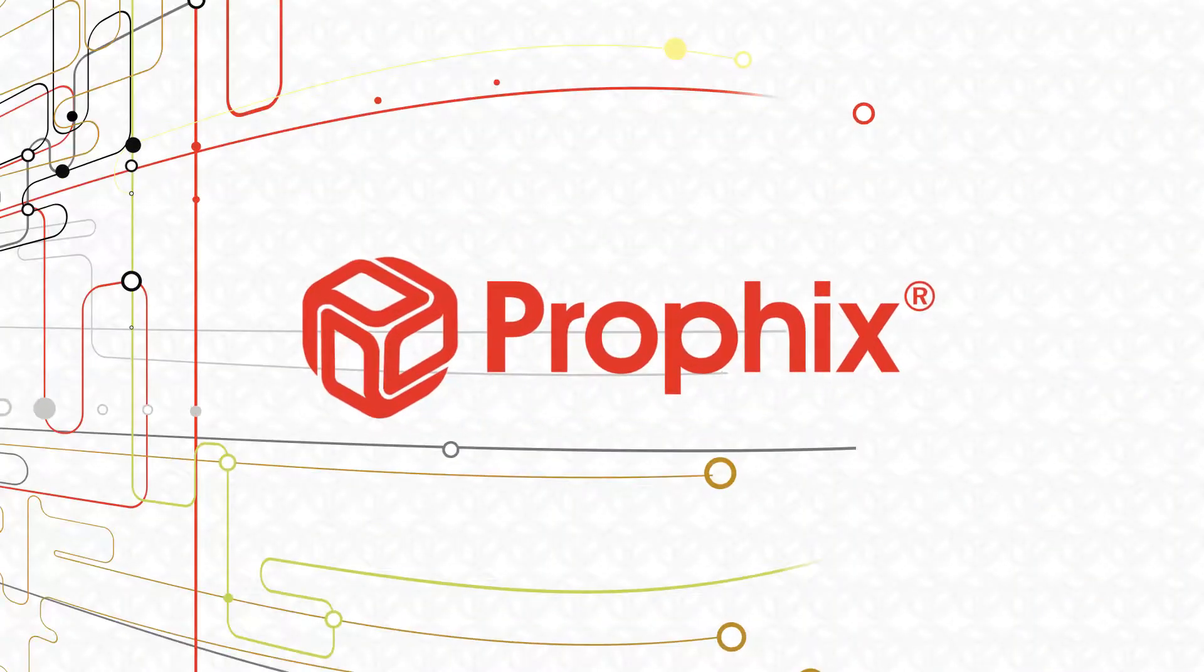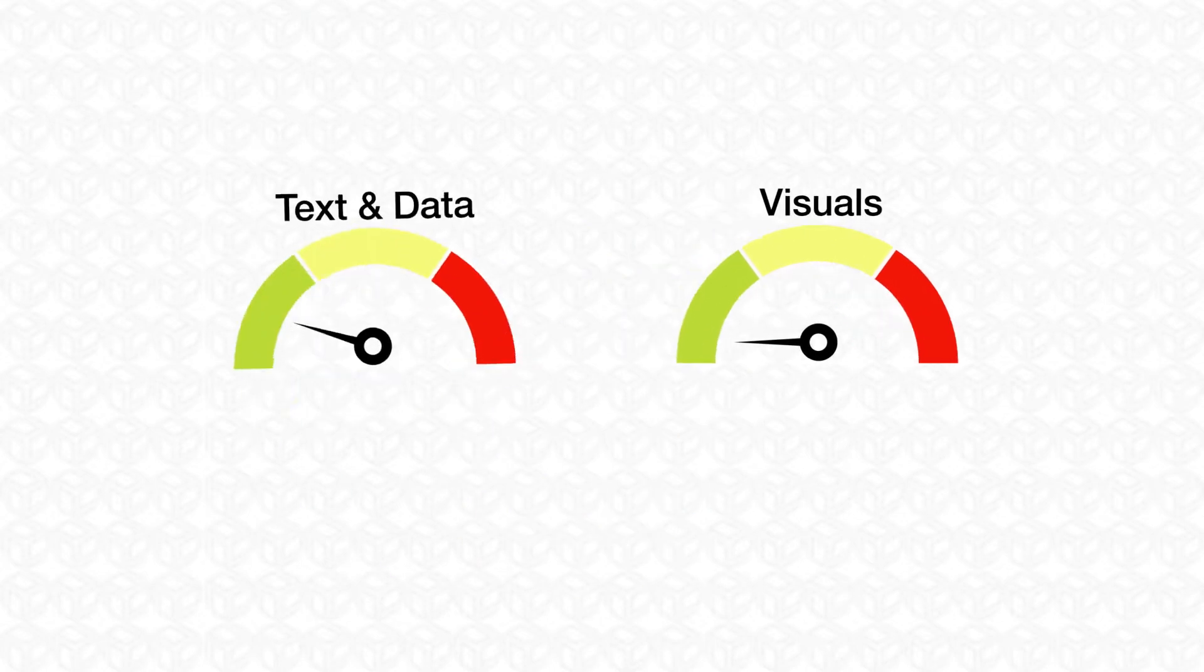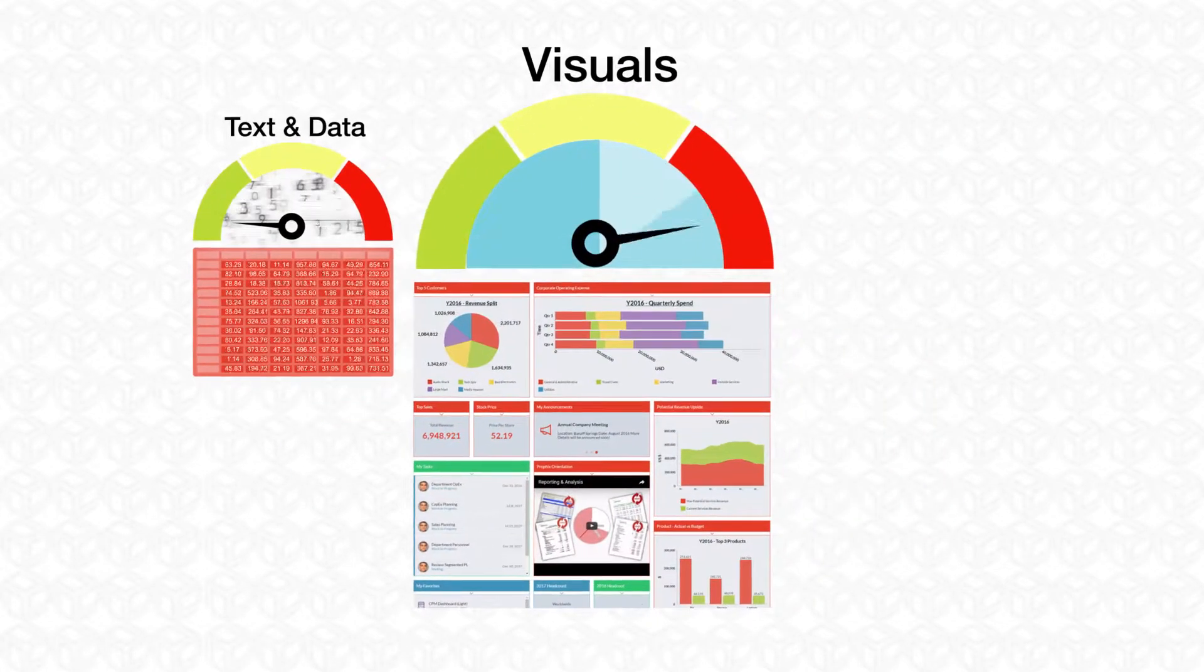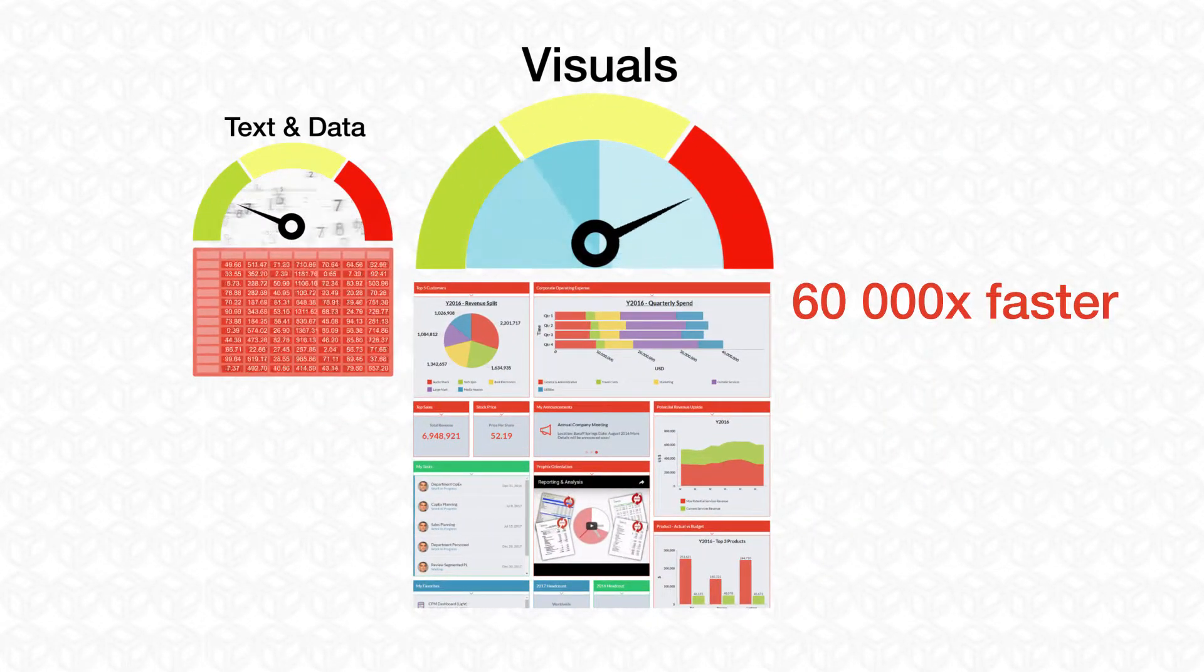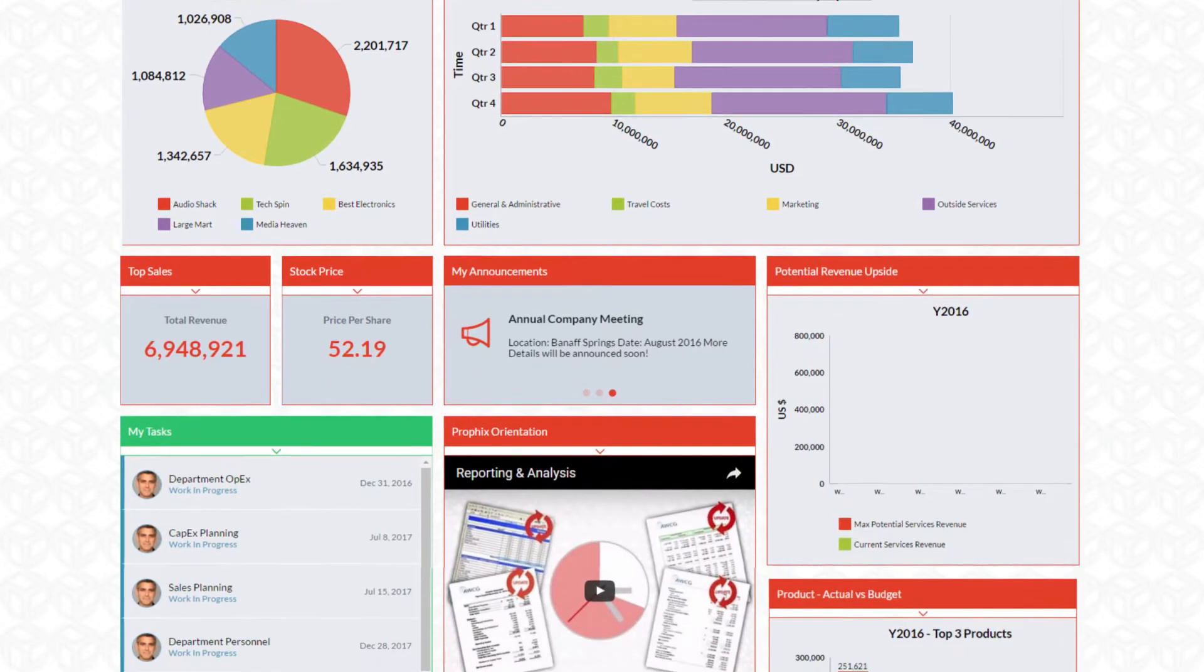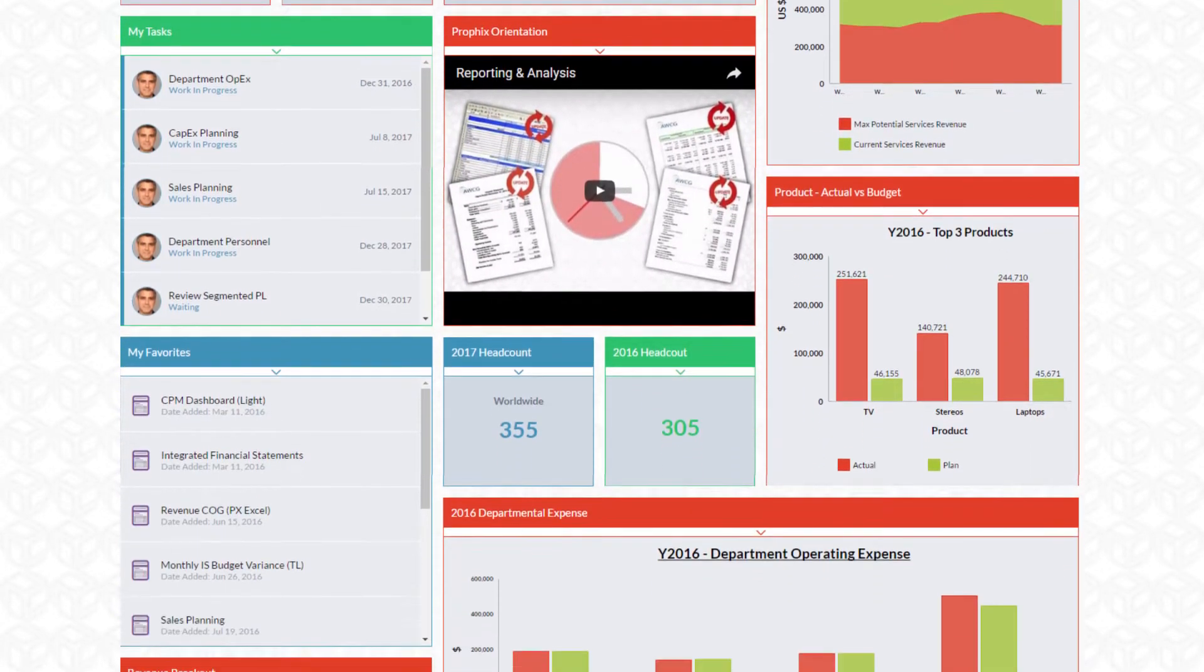Profix has the answer. It is said that we process visual information 60,000 times faster than text or data. Profix Visual Analytics makes working with data easier and more intuitive.